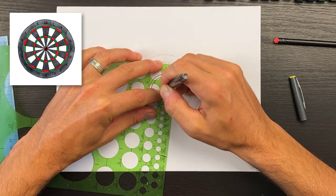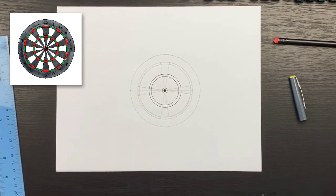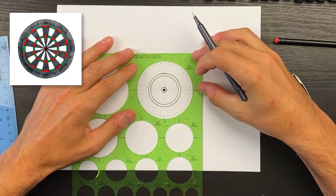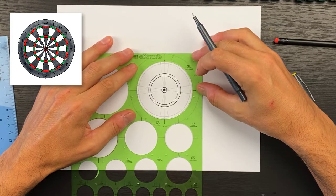You can even go and put a smaller one for right in the center. Then I'm just going to fill that in just like that. Since I'm here, I will go and get that largest circle that I drew with my template.